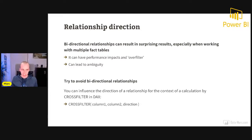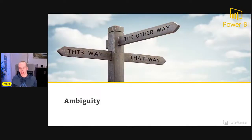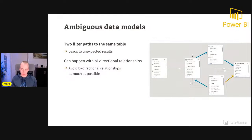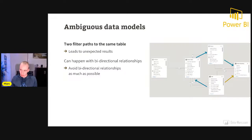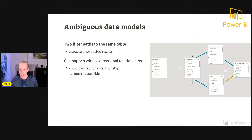This can lead to ambiguous data models — but what exactly is an ambiguous data model? An ambiguous data model is an example where you have two different filter paths that lead to the same table. This can lead to unexpected results, and it can happen when you start using bidirectional relationships. Typically, Power BI will warn you if it bumps into an ambiguous filter path when you create a bidirectional relationship — but this is not always the case.